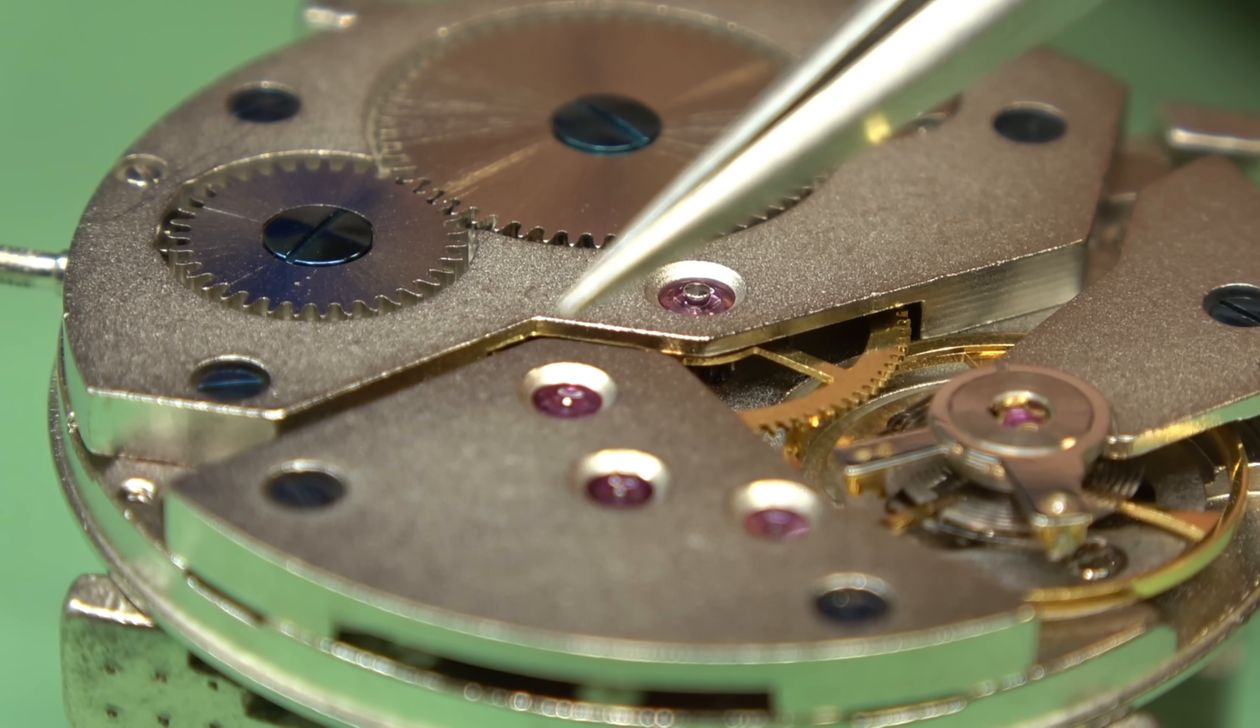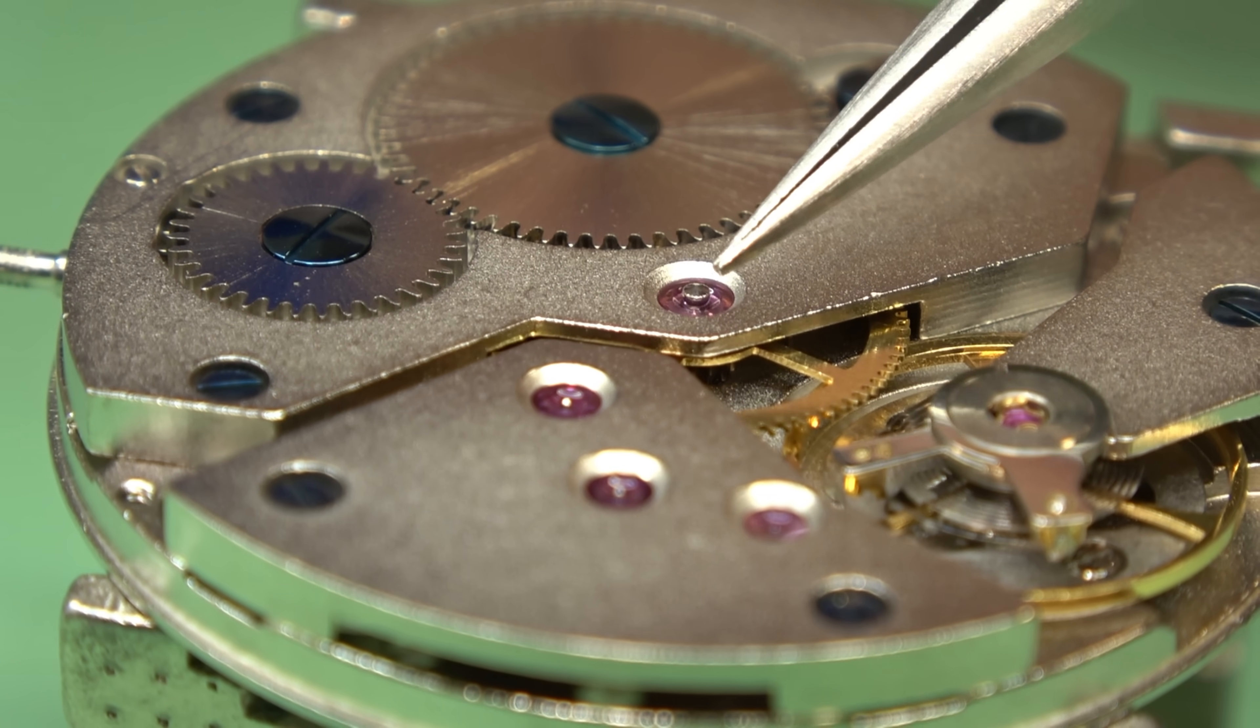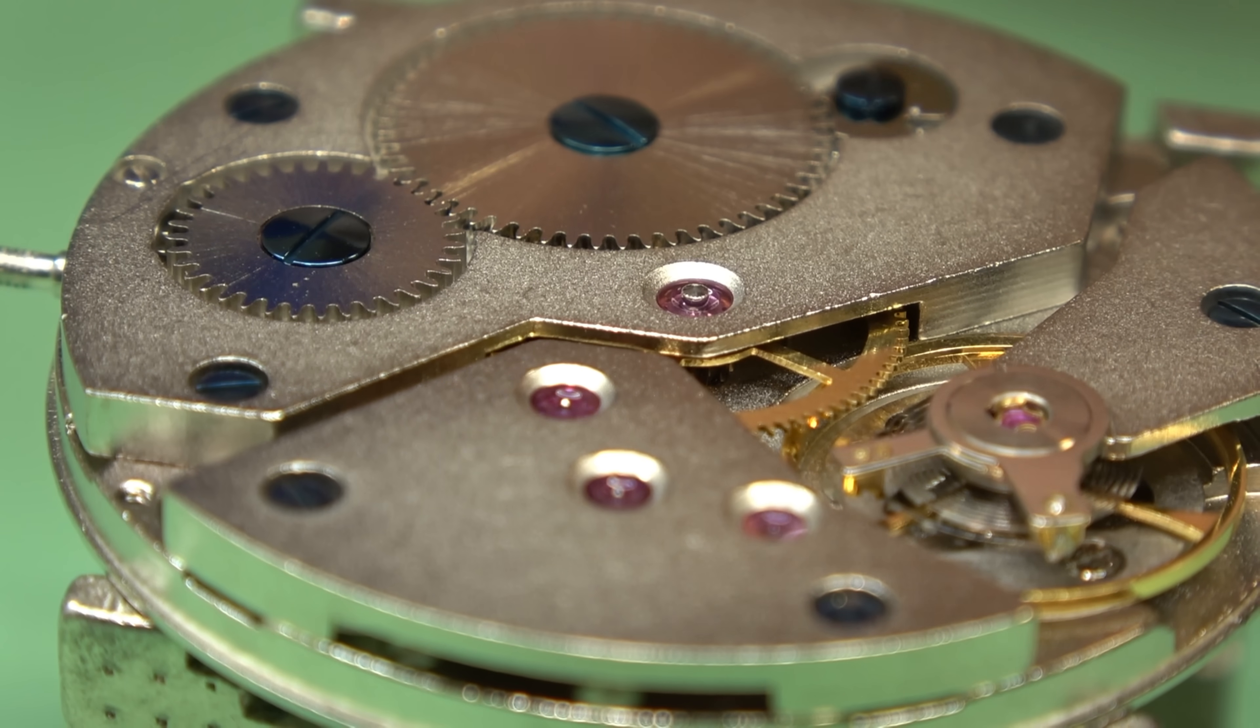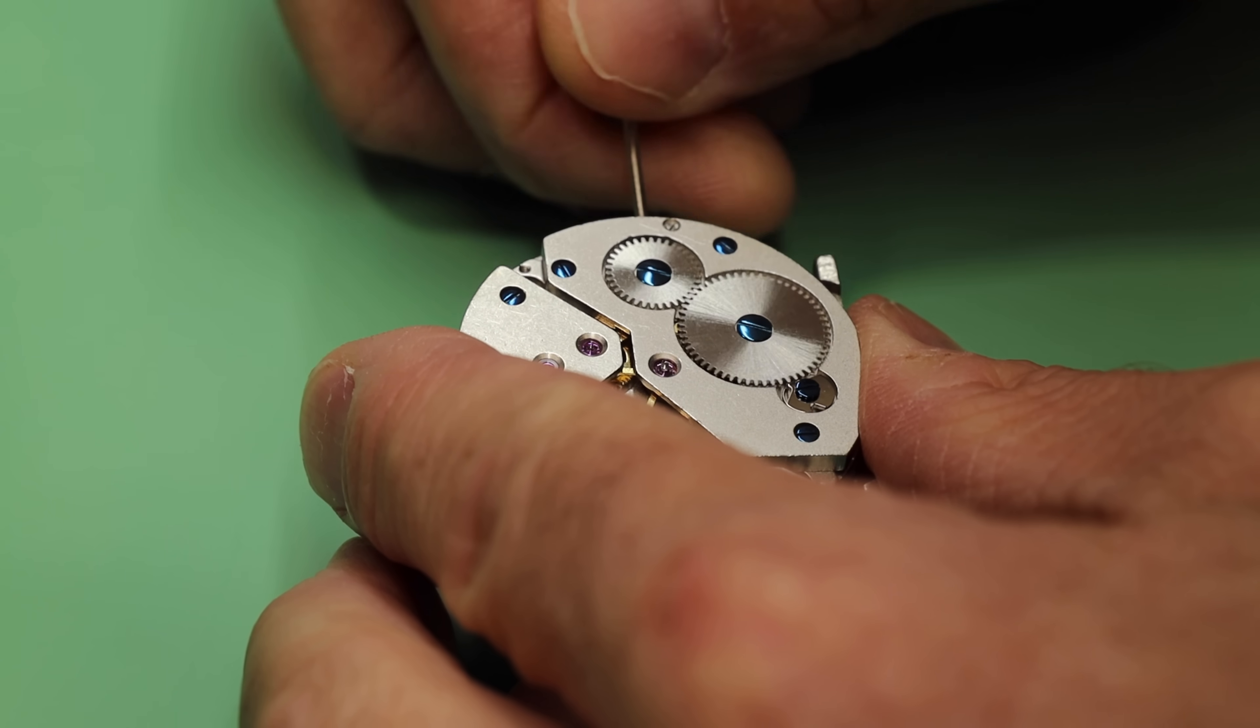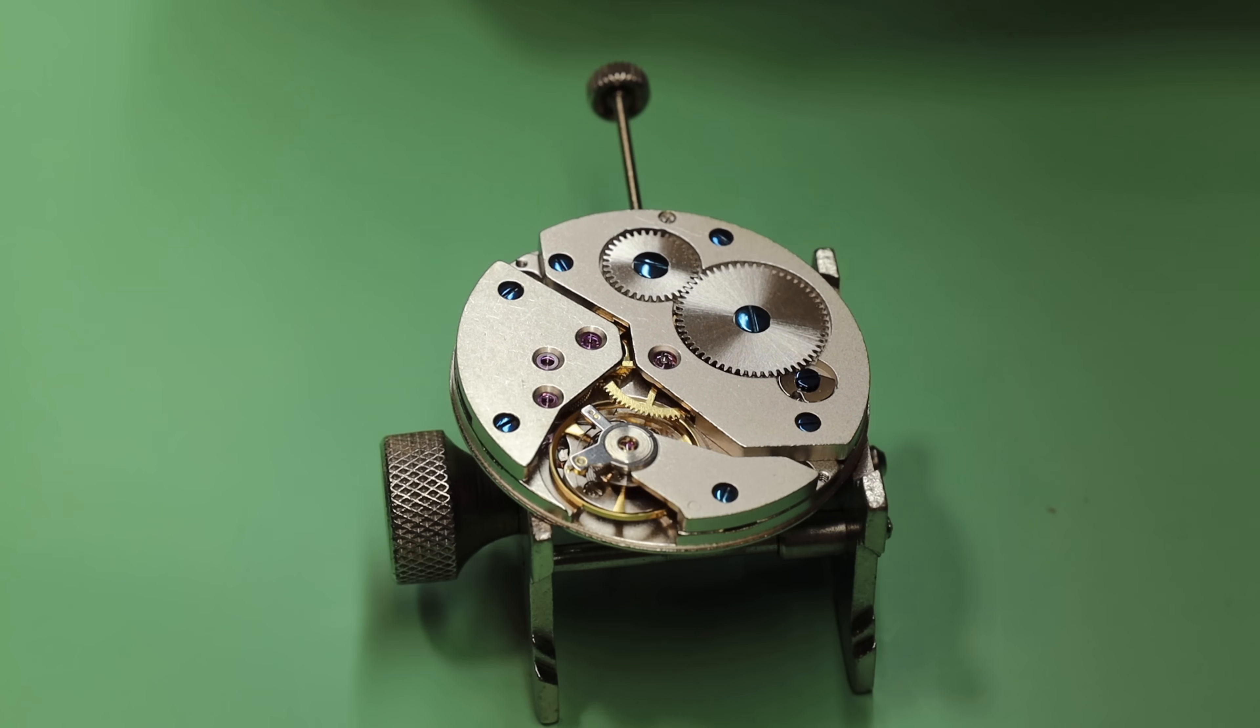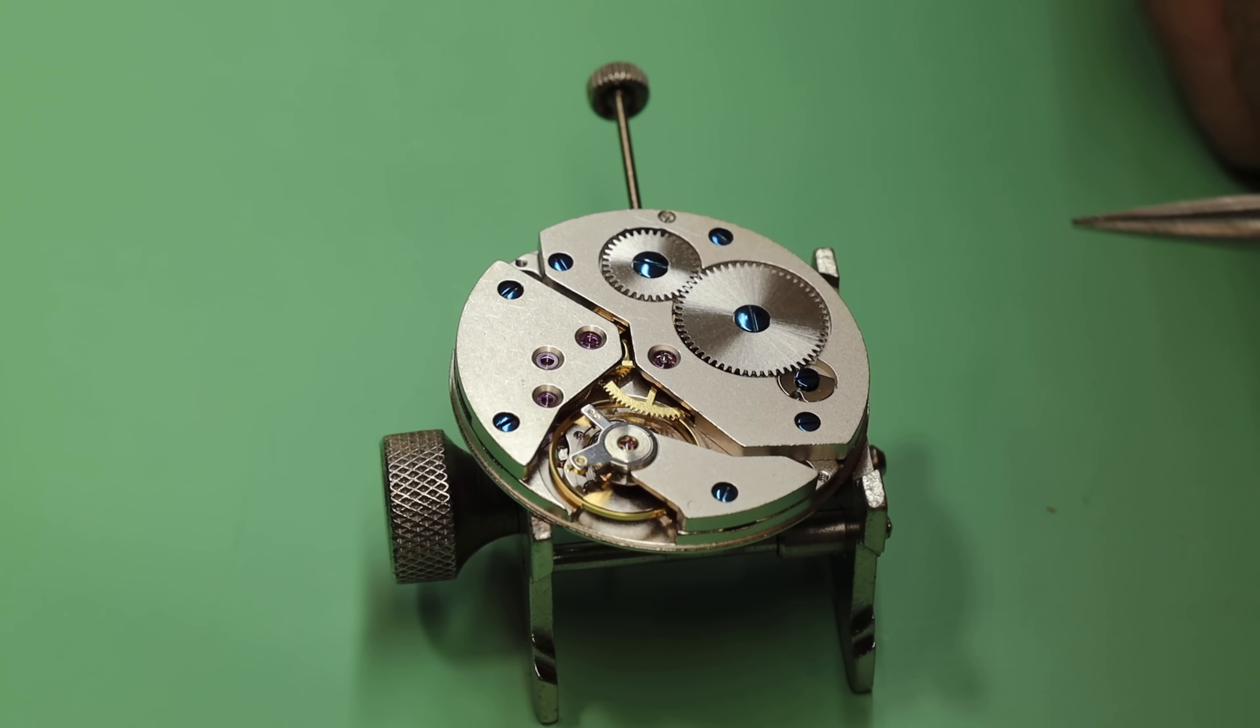When you get into center seconds, you start getting pinions going through pinions, through hollow shafts in the middle of the watch. It makes it far more complicated. This is simple. So let's start on the movement side, right? So if I wind this sucker up, it should start. There it goes. It's ticking away.